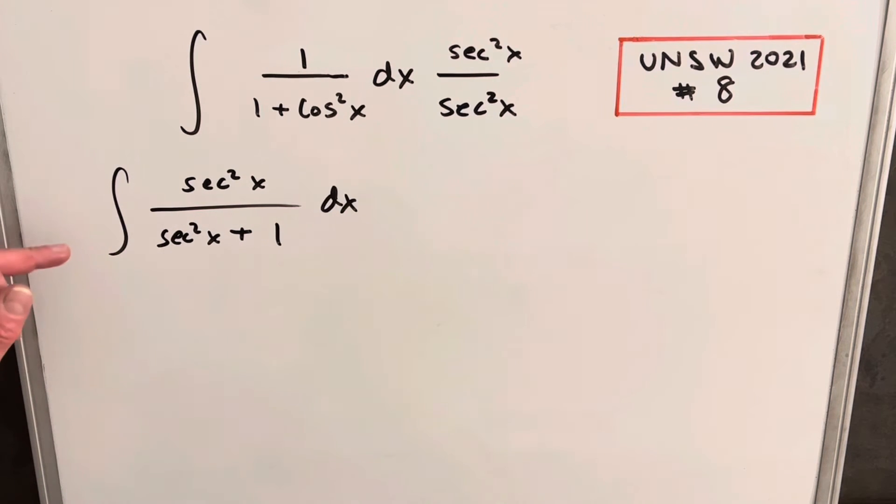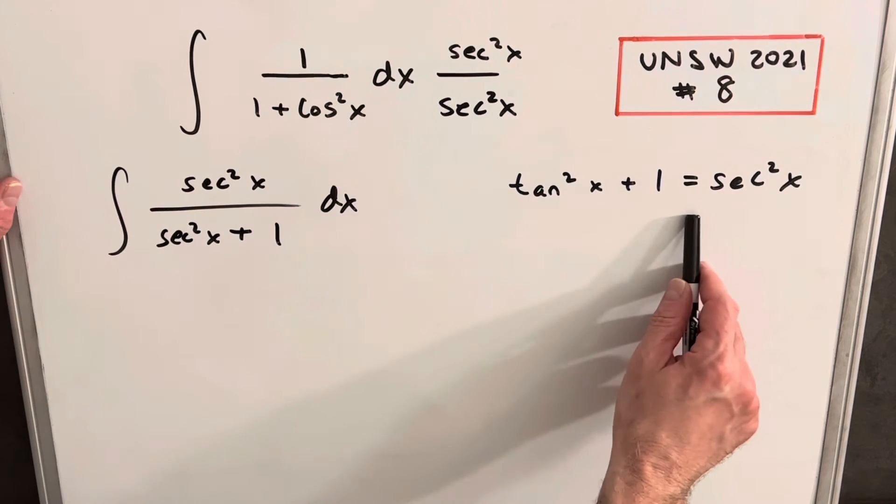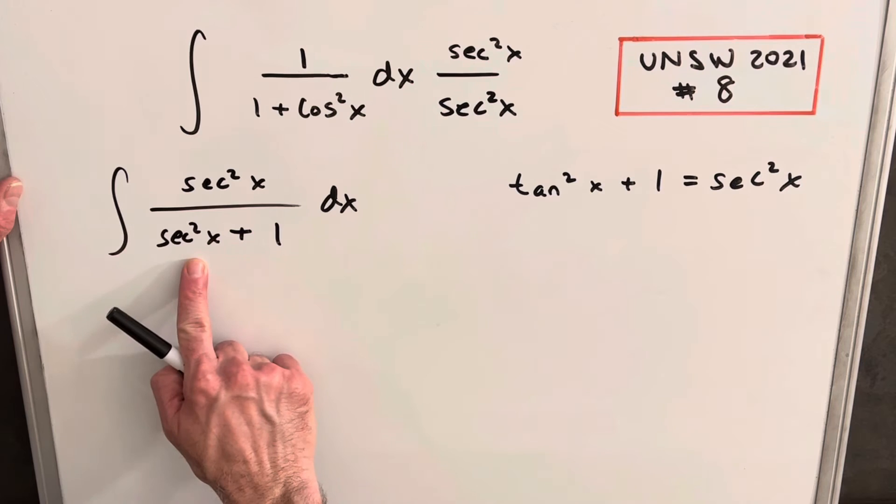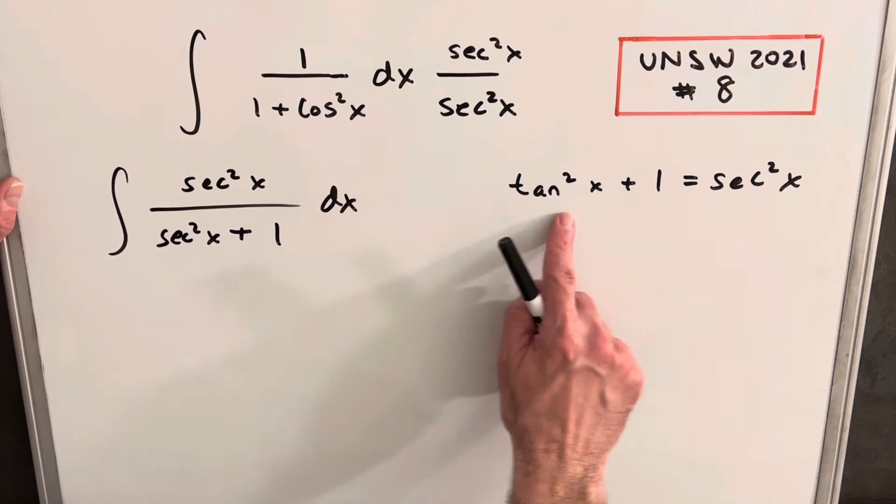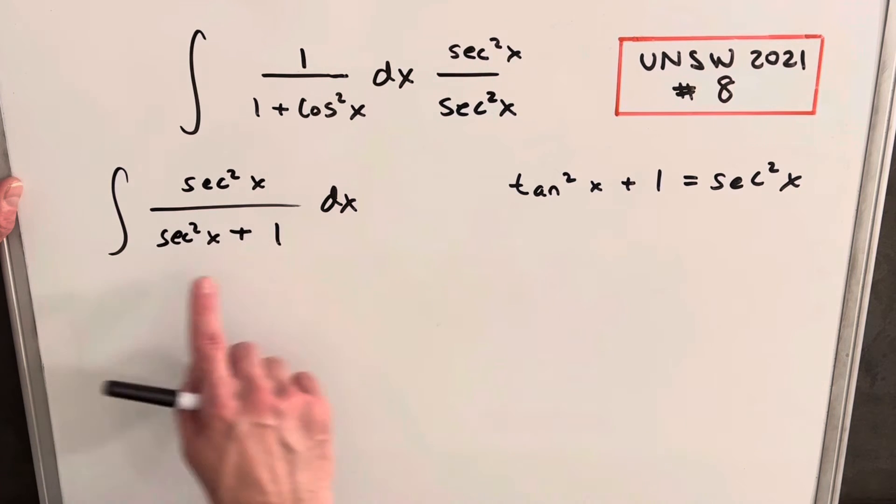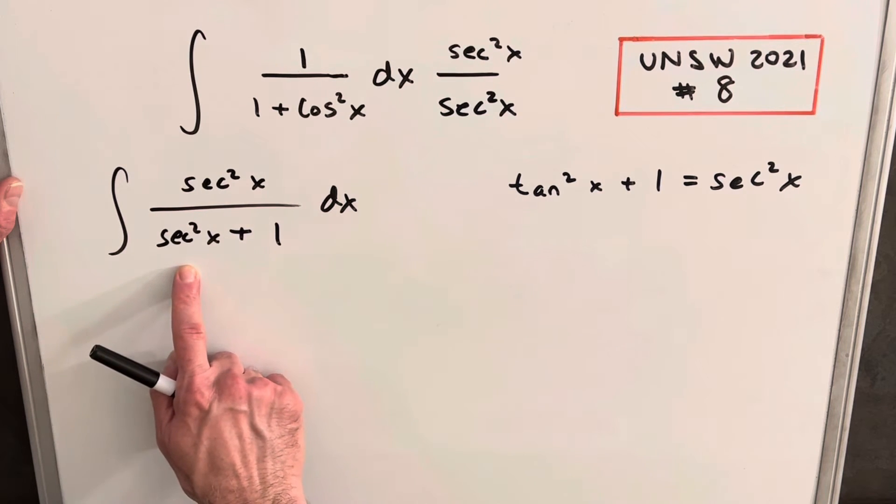I think what I want to do now is use a trig identity to transform this a little bit more. Using this formula over here on the right, what we can do is plug in for our secant squared x in the denominator. We'll plug in tan squared plus one. We don't want to do it in the numerator though. If we have a tan in the denominator, then we're set up for a u substitution.